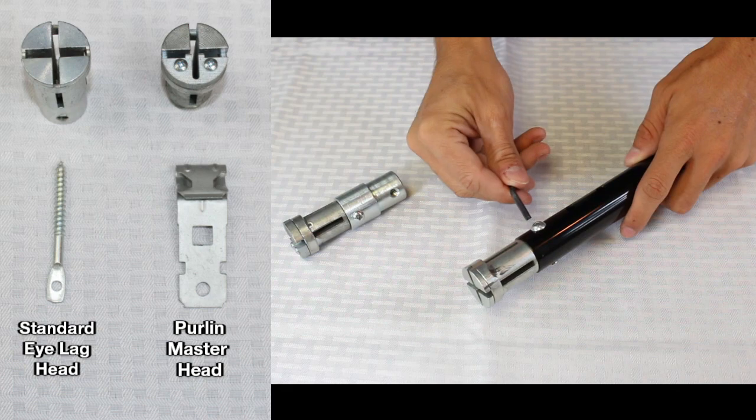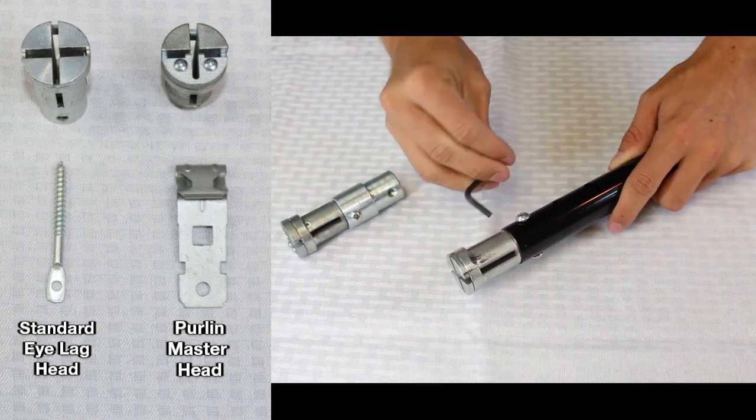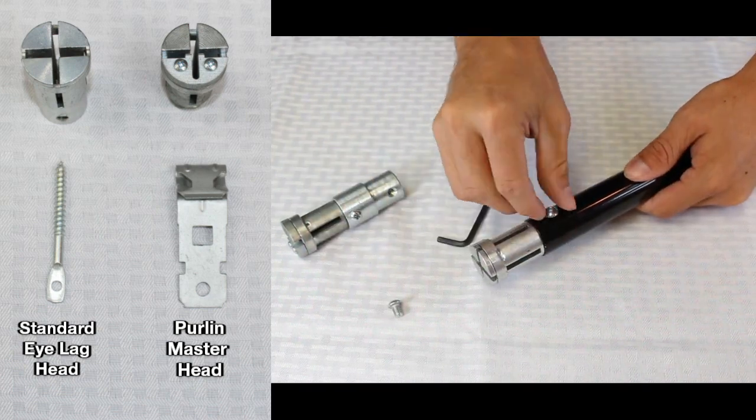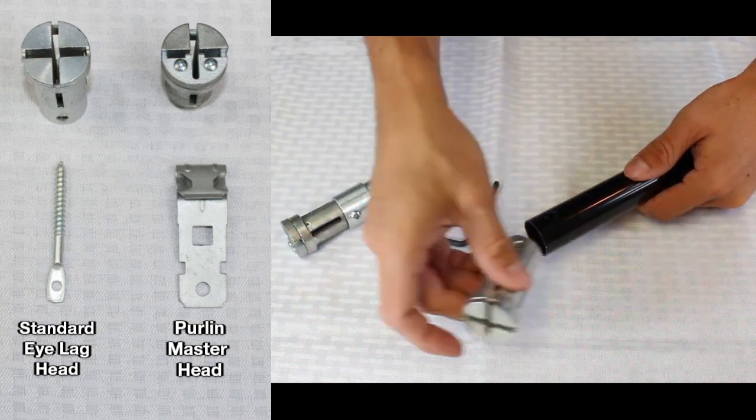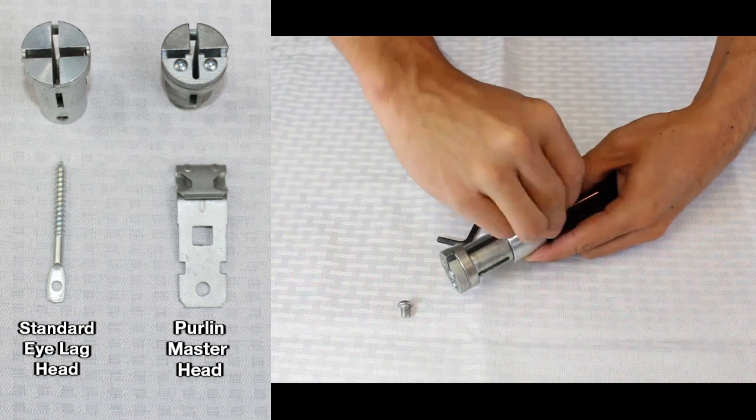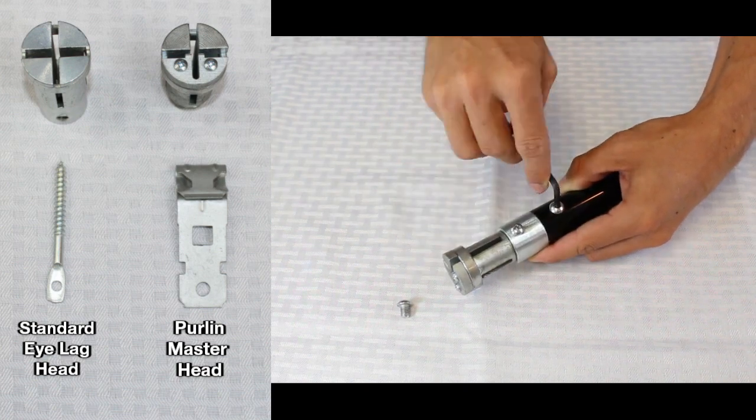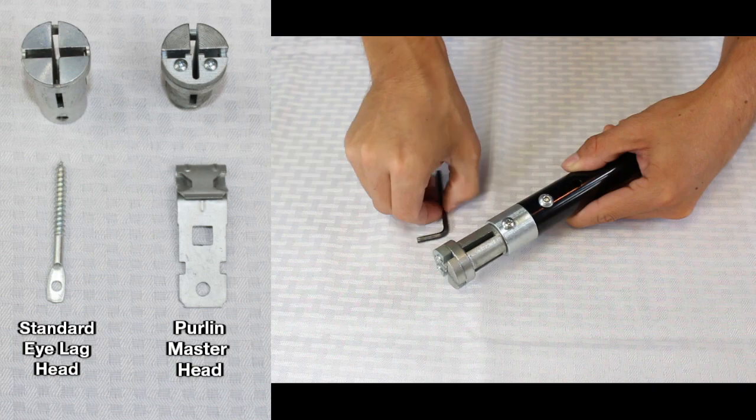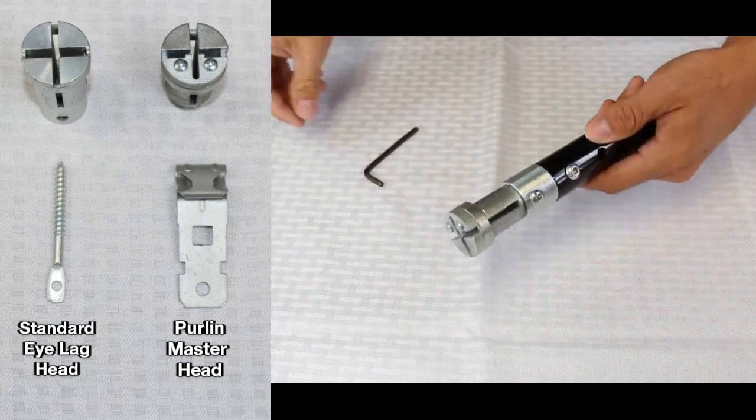Another option is to add a purlin master head to your lag pole that works just like a standard lag head, but with purlin clips. It has a similar flange to the purlin clip installation tool, but inside a lag pole head, allowing you to use standard ceiling wire rather than just pre-tied wire.